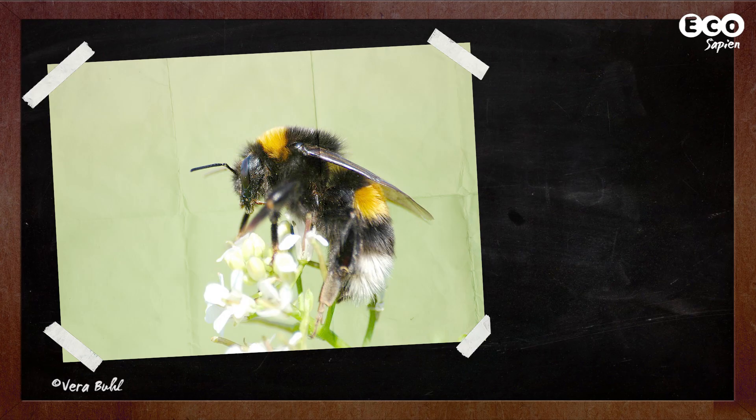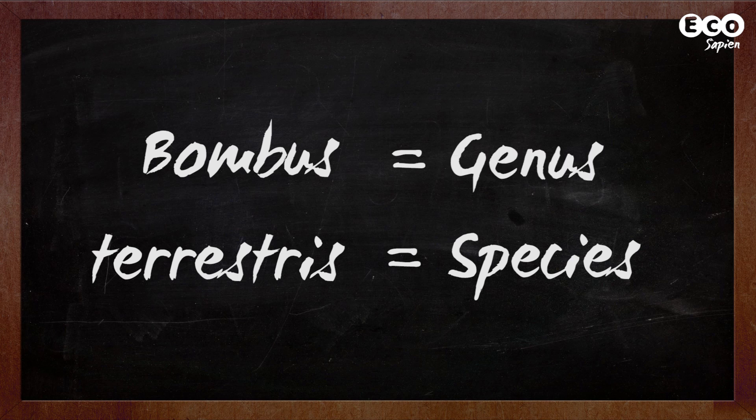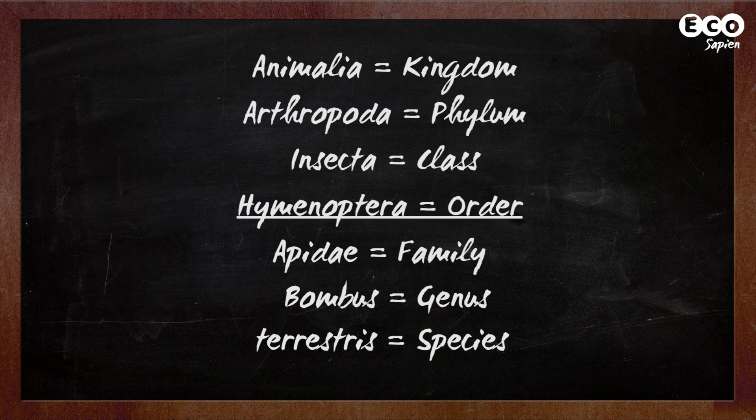Take this bumblebee. Its Latin binomial name is Bombus terrestris. No other creature on earth has that name. Terrestris is the species name given to that specific type of bumblebee. Bombus is the name of the genus — the next level of ranking up — and is shared by all bumblebees. But where does order come into this? Well, genus and species are set within a bigger ranking system that starts with kingdom and heads all the way down to species, and sometimes beyond.